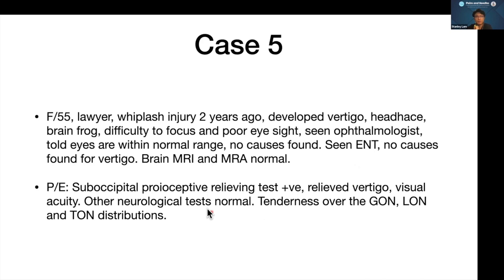Case 5 is a 55-year-old lawyer with a whiplash injury two years ago. She developed vertical headache, brain fog, difficulty focusing, and poor eyesight. Ophthalmologist found eyes within normal range; ENT found no cause for the vertigo; brain MRI and MRA from brain down to neck were normal. Physical examination: suboccipital proprioceptive relieving test positive; also tenderness over bilateral greater occipital nerve, lesser occipital nerve, third occipital nerve distribution, and suboccipital nerve.